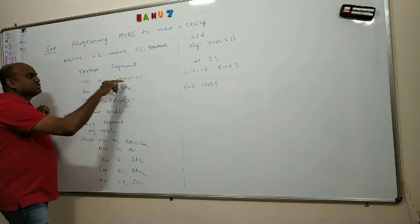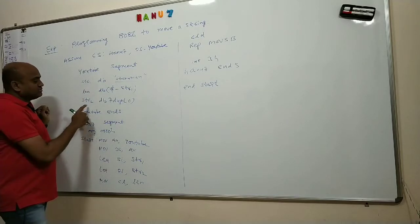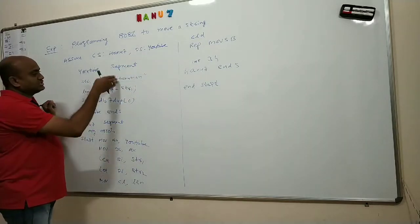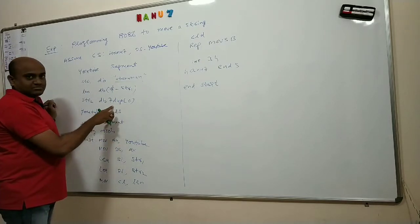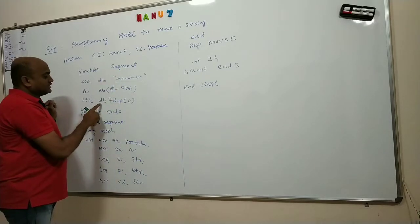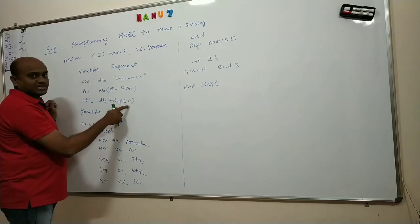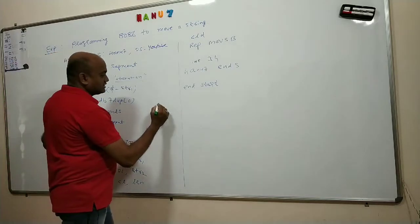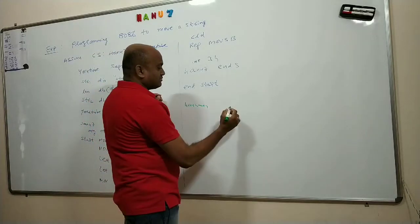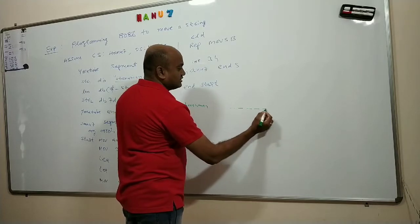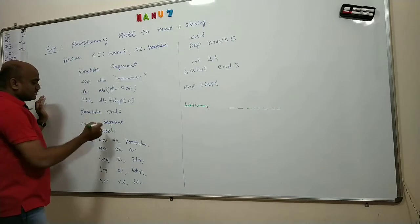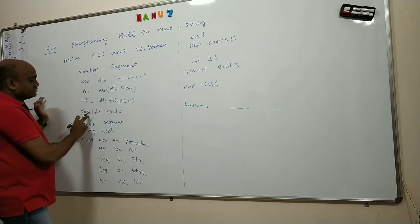Now in order to move this string to another segment, I have to create some space for that. So I am creating 7 duplicate values. Whatever data is available in the next 7 locations after storing this input string, I am initializing them to default values. So that can be done by str2 — the name of the next string where you are supposed to move this. It is also byte size. I am allocating 7 duplicate values there. So it is just like your input string Hanuman is in the data segment and I want to move it to another place where I am initializing 7 locations: 1, 2, 3, 4, 5, 6, 7. This completes our data segment, so end the data segment.